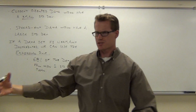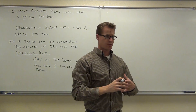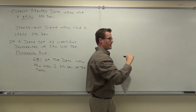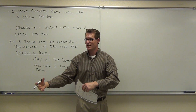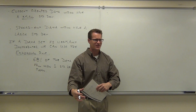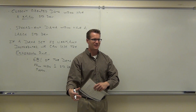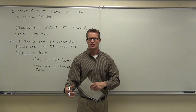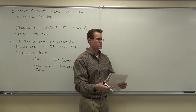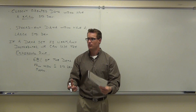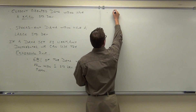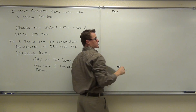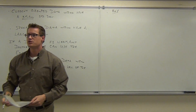If 68% falls within one standard deviation, what percentage falls within two standard deviations? That's the next percentage. Within two standard deviations, you're going to get 95% of your data. That's a lot of people. So 68% for the first standard deviation, and 95% of your data will fall within two standard deviations.